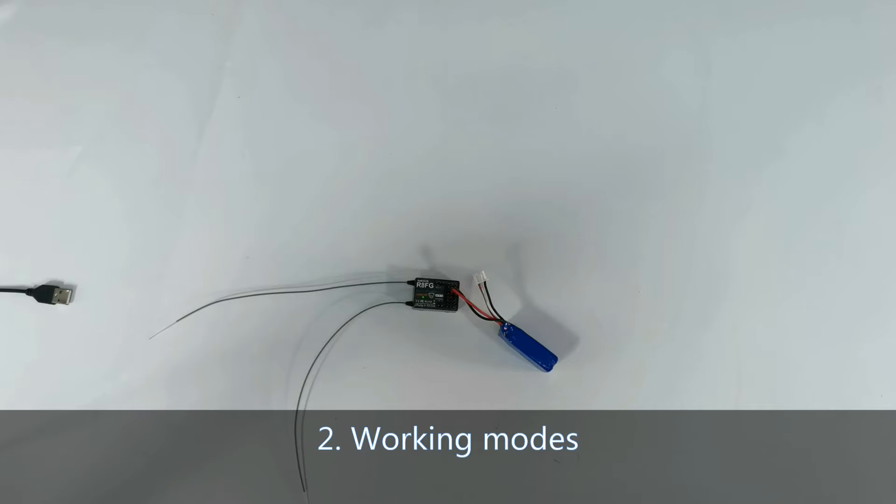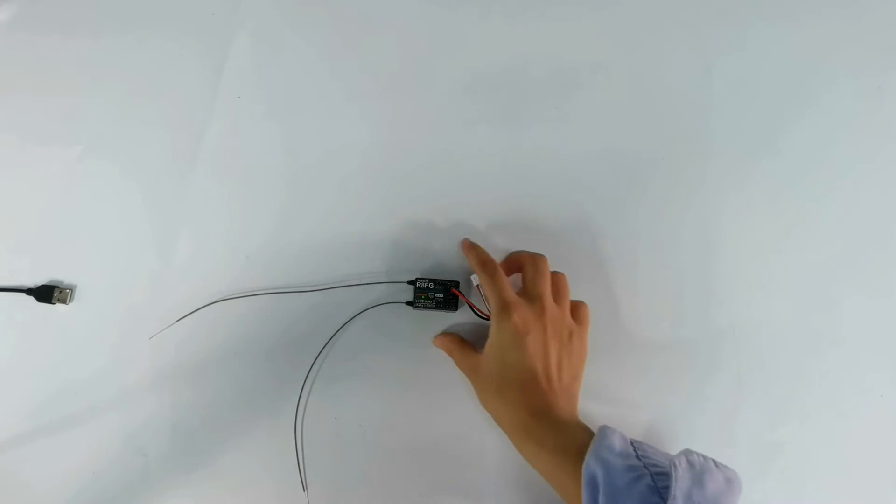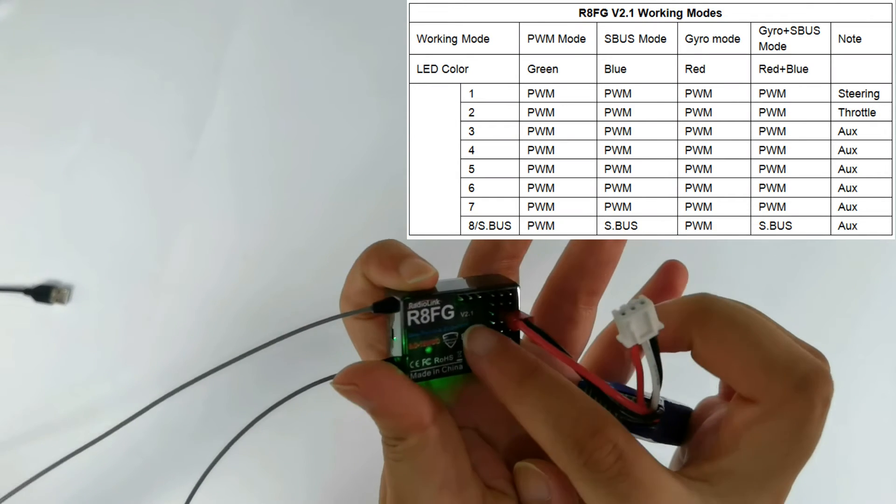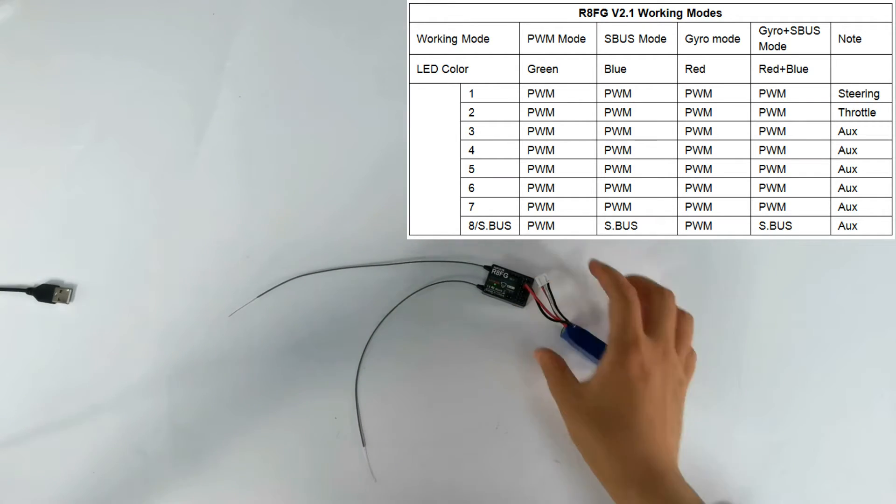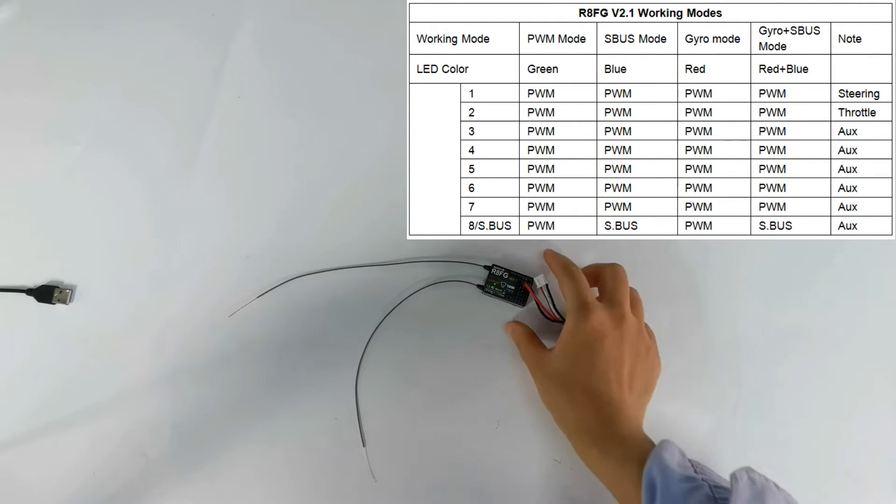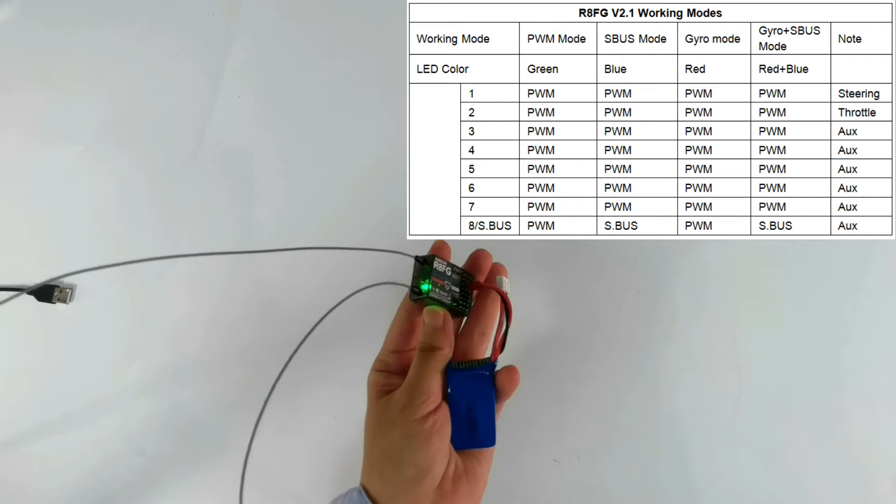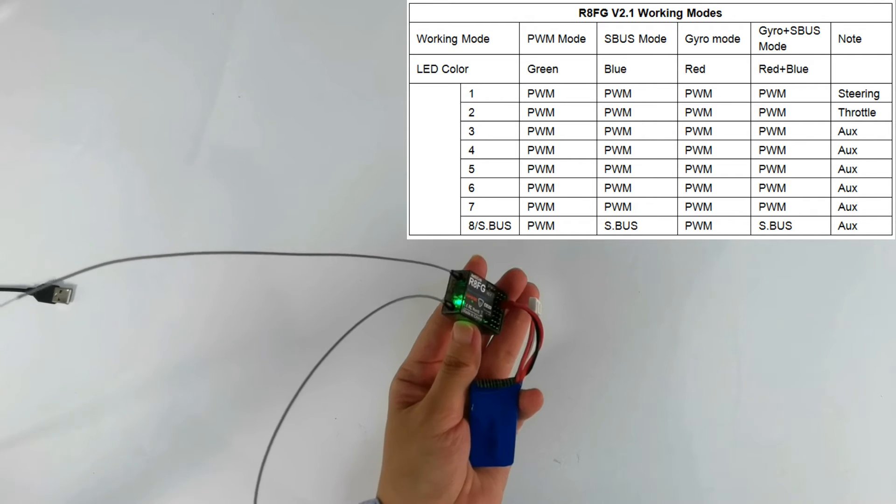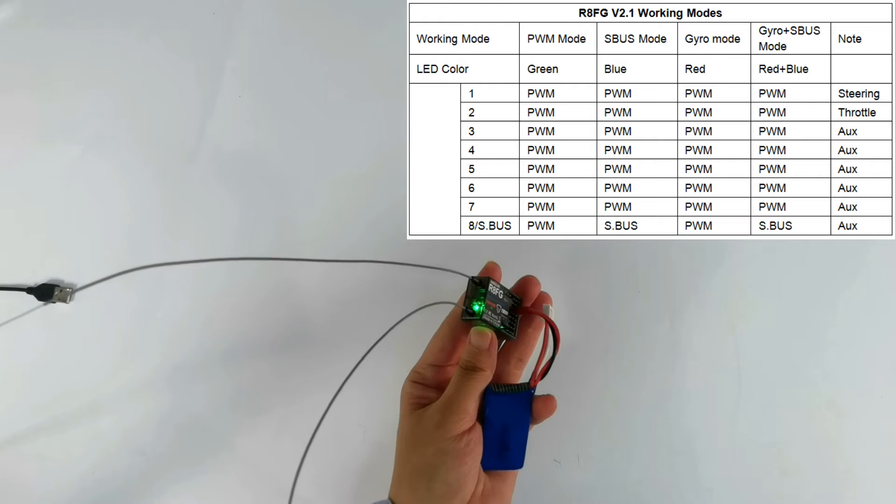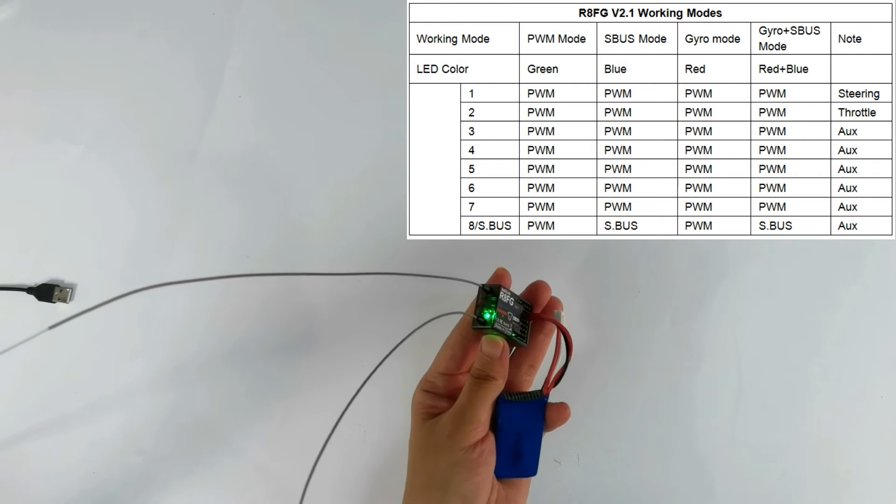Two, working modes. There are four working modes for R8FG variant 2.1, including ordinary PWM mode, SBUS mode, gyro mode, and gyro and SBUS mode. Check the chart for more details of the four working modes. You can confirm the current working mode by the LED indicator color of the receiver. It is green for PWM mode, red for gyro mode, blue for SBUS mode, and red and blue for gyro and SBUS mode.